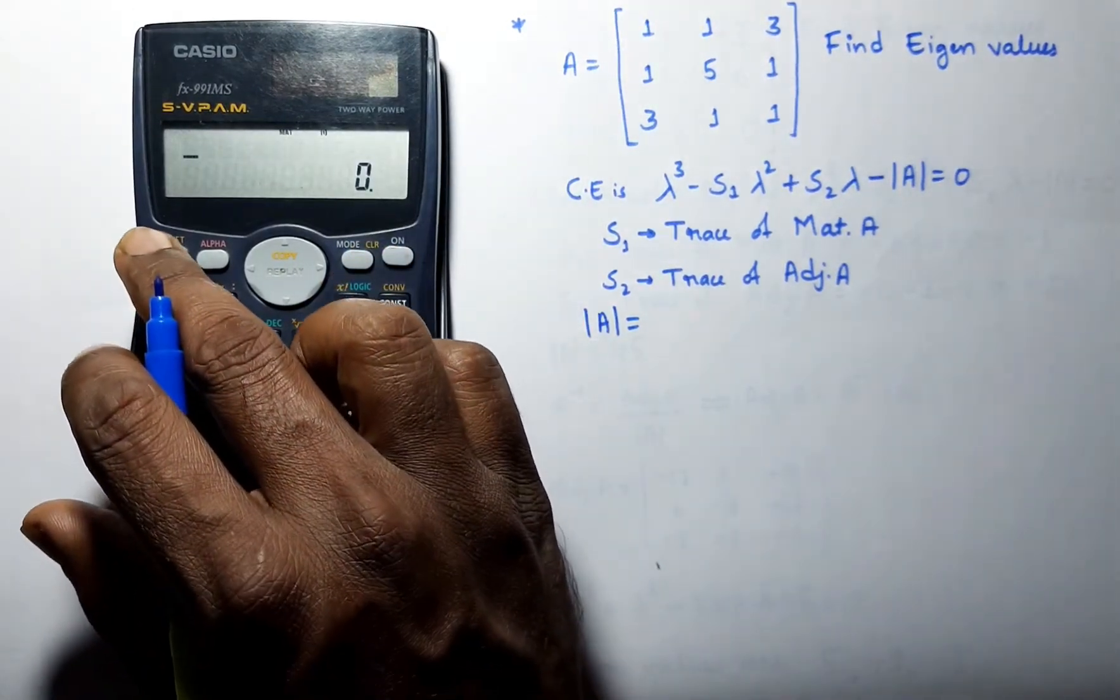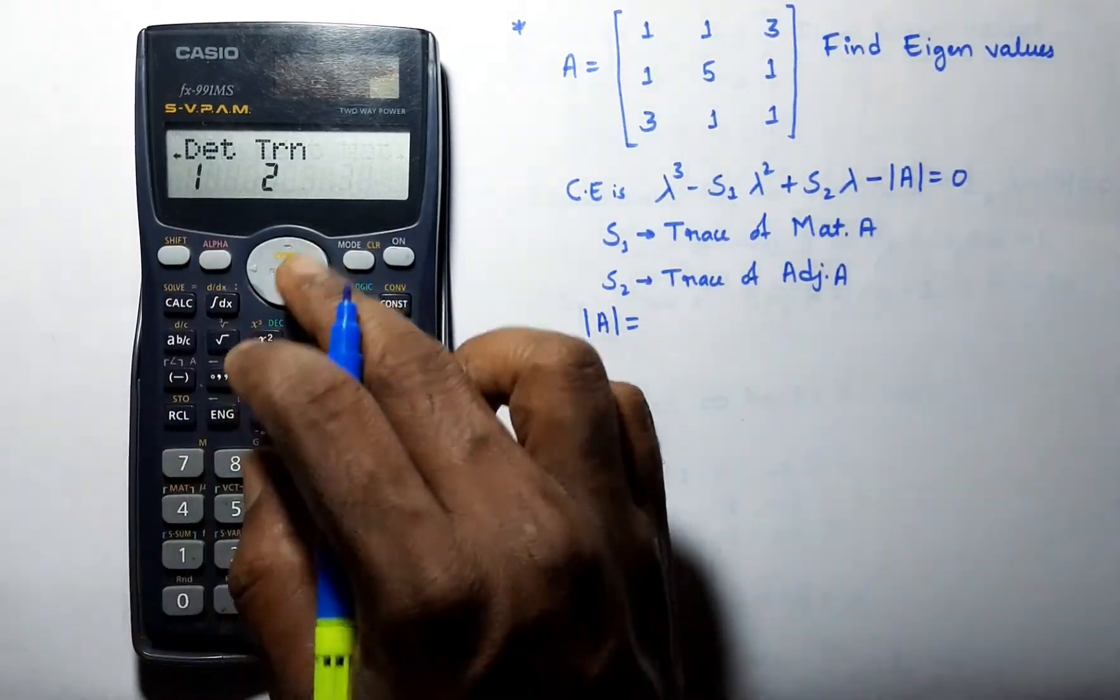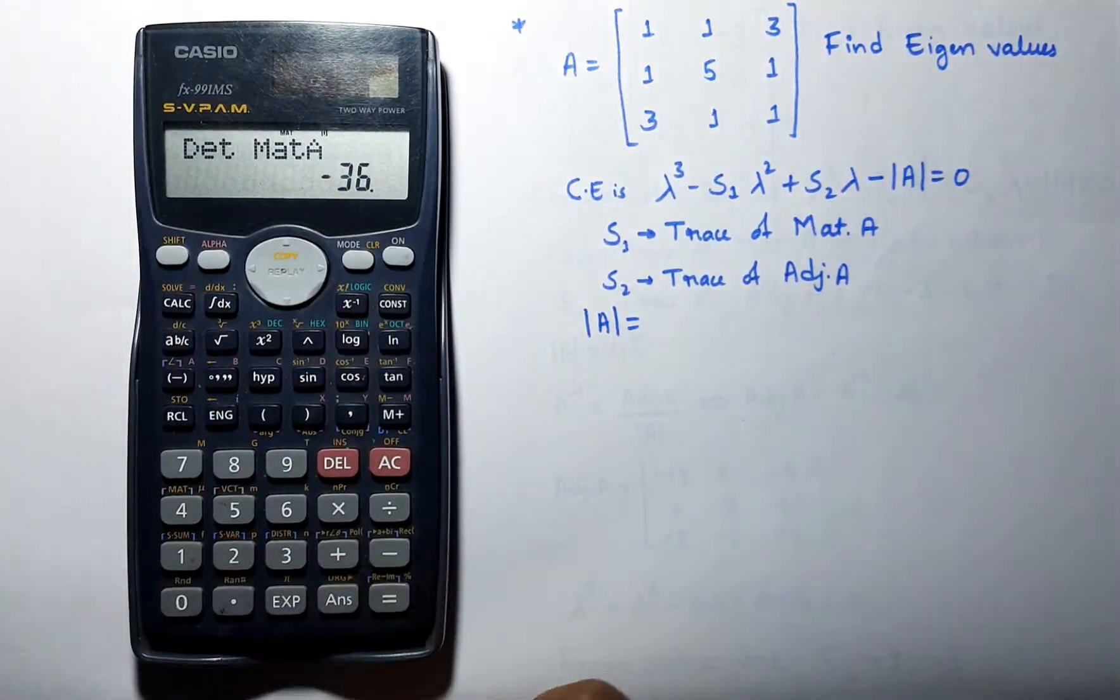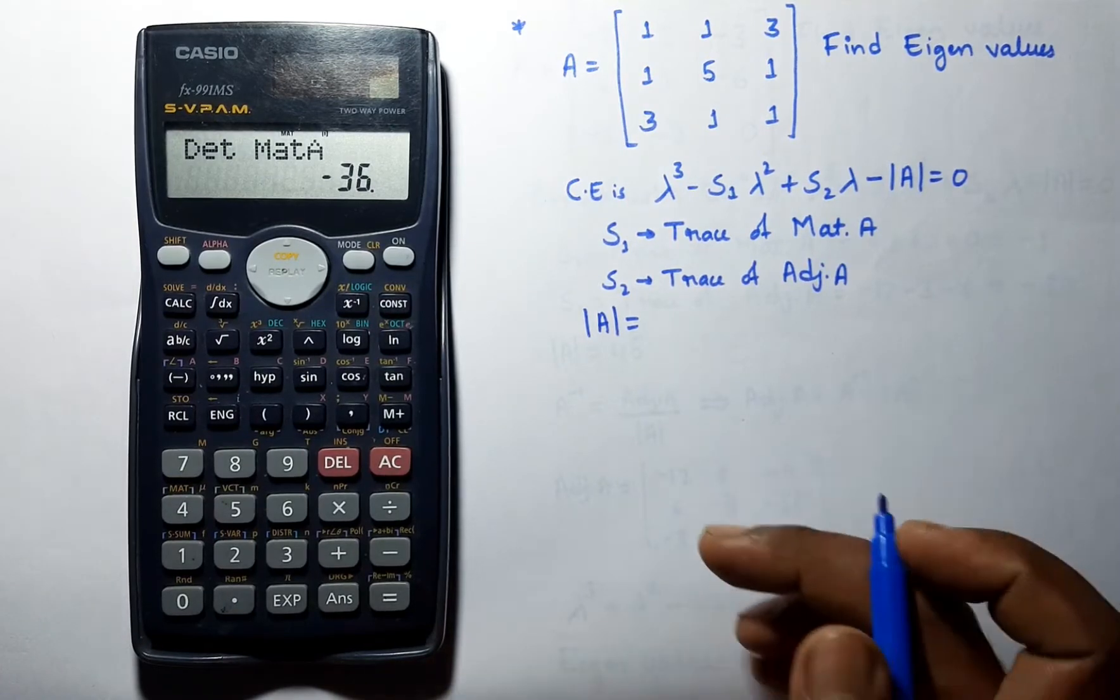Now select matrix, go to determinant, and the determinant of A is minus 36.